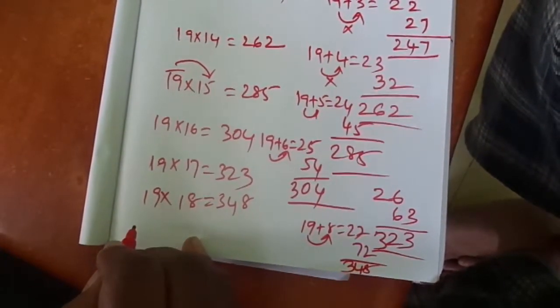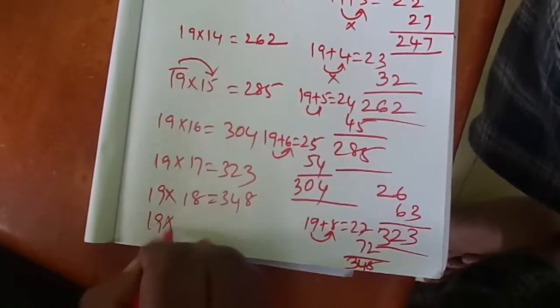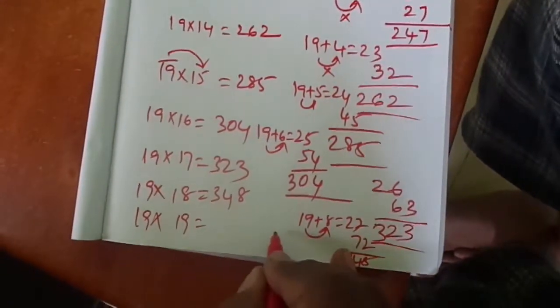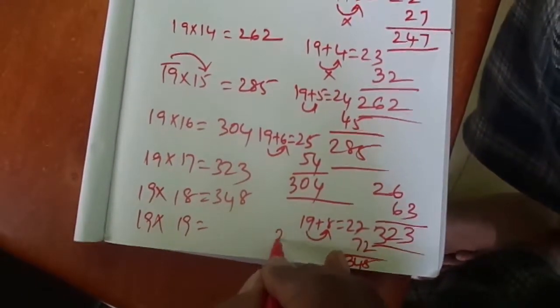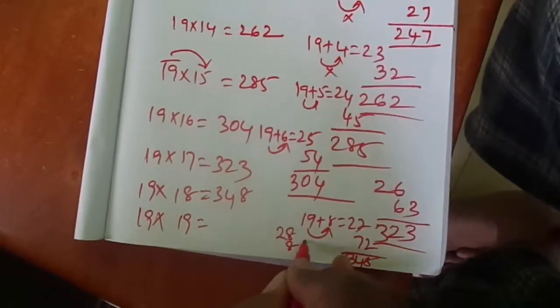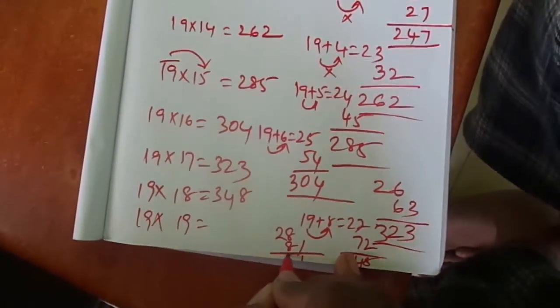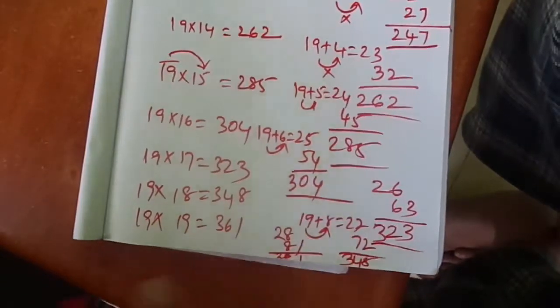19 × 19: 19 plus 9 is 28. 9 × 9 is 81. 28 and 81, you get 361.